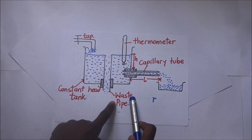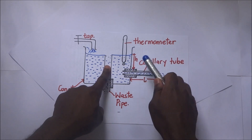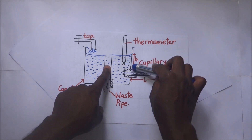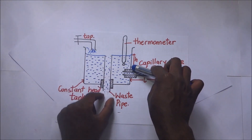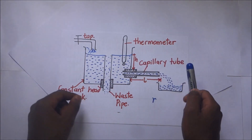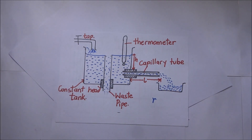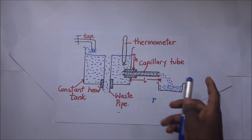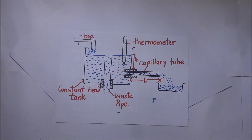The purpose of the waste pipe is to regulate the height H of the water. We can regulate H by pulling the pipe up or down. By regulating this height, we are essentially regulating the pressure exerted by the water, since pressure in liquids is influenced by height or depth. The greater the height, the greater the pressure, and vice versa.